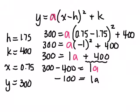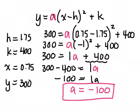Negative 100 equals 1a. So what's a equal to? Negative 100. Right? 1a divided by 1. Negative 100 divided by 1 is negative 100.